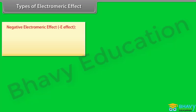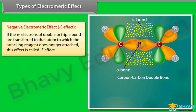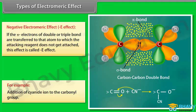In the negative electromeric effect (negative E effect), the pi electrons of a double or triple bond are transferred to the atom to which the attacking reagent does not attach. For example, the addition of cyanide ion to the carbonyl group.